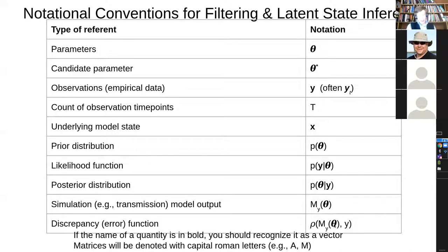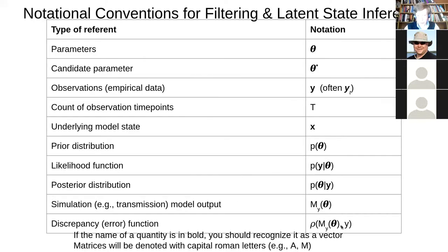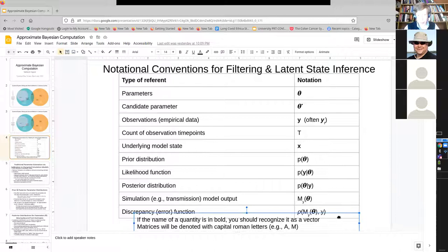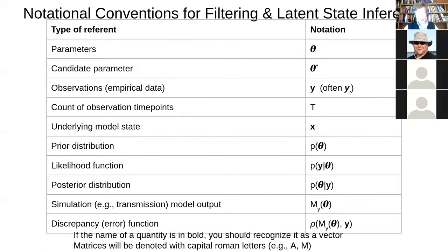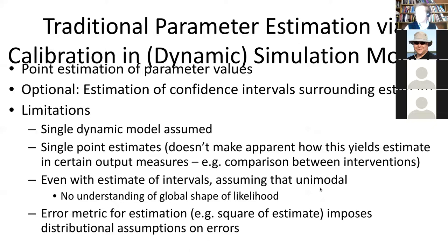There's a discrepancy function that compares model output to actual observations from the world. You may be excused for asking: we want to estimate parameter values — isn't that what we're doing with calibration? We take observations about the world, calibrate to them, and get out parameter values. So what's the big deal here?